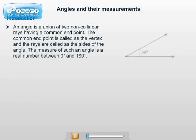You have defined an angle as the union of two non-collinear rays having a common end point. The common end point is called the vertex and the rays are called the sides of the angle. The measure of such an angle is a real number between 0 and 180.